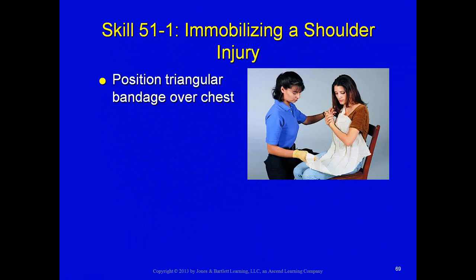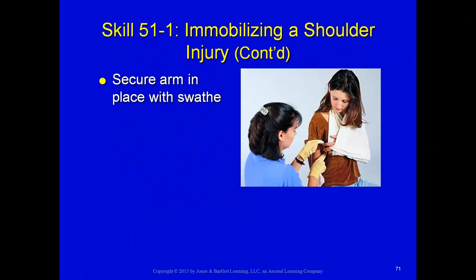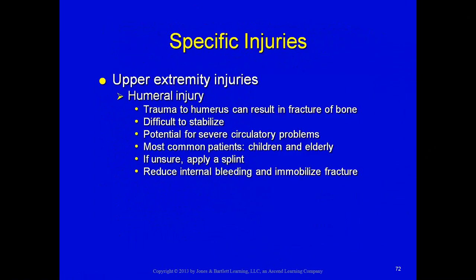They are showing how to position a triangular bandage over the chest, tie it around the neck, and secure the arm with a swath. The sling immobilizes the clavicle, shoulder, forearm, elbow, upper arm, wrist, and hand — but you can still kick the elbow out, allowing shoulder and clavicle movement. By applying a swath, you prevent the elbow from kicking out.